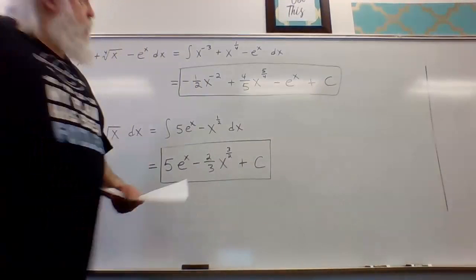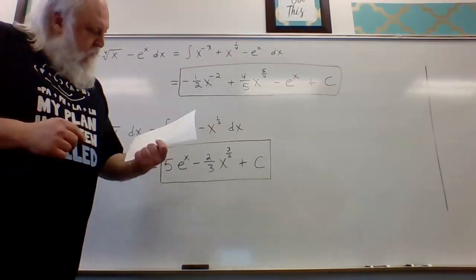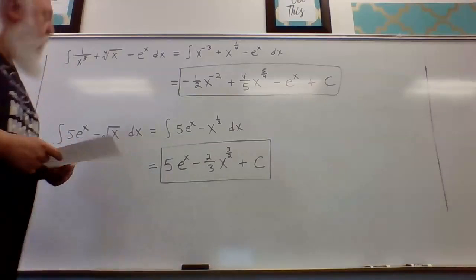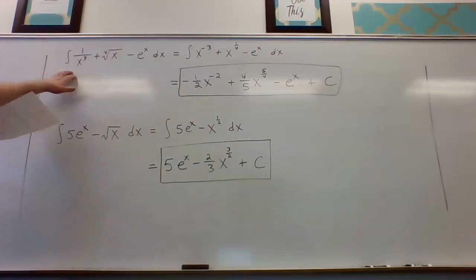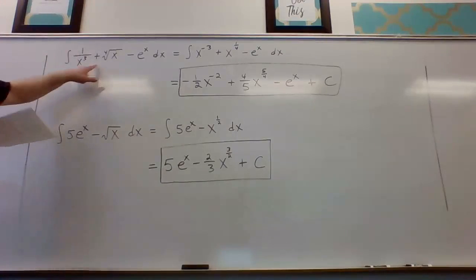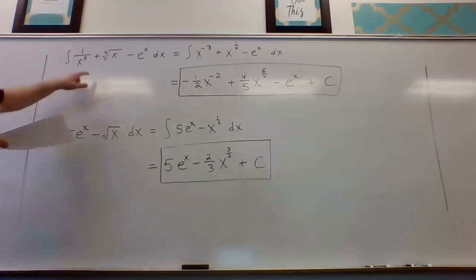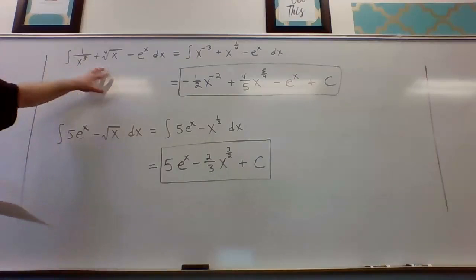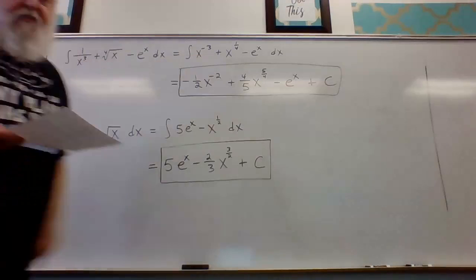We continue with the examples for rule five at the top of page 73 of your note packet. Example three asks us to find the antiderivative of one over x cubed plus the fourth root of x minus e to the x. By the sum and difference rule, we antidifferentiate term by term. One over x cubed is the same as x to the minus three.